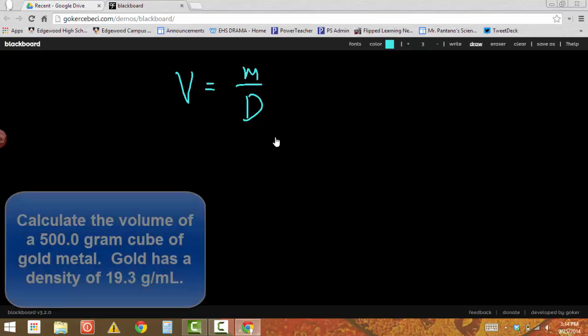So for example, if volume is equal to mass over density, let's say that I want to calculate the volume of a 500 gram cube of gold metal. And gold has a density of 19.3 grams per milliliter. So I want to find the volume. I know that I have 500 grams. I'm going to make this 500.0 grams of gold. And the density of gold is 19.3 grams per milliliter.